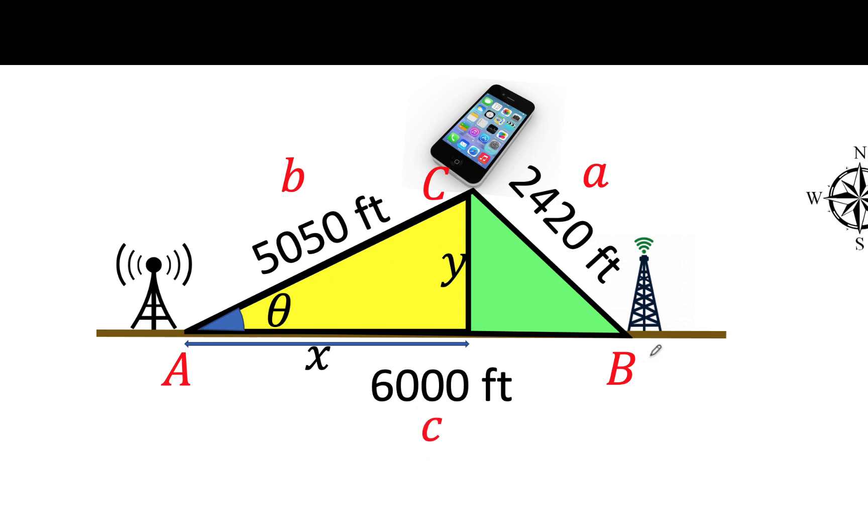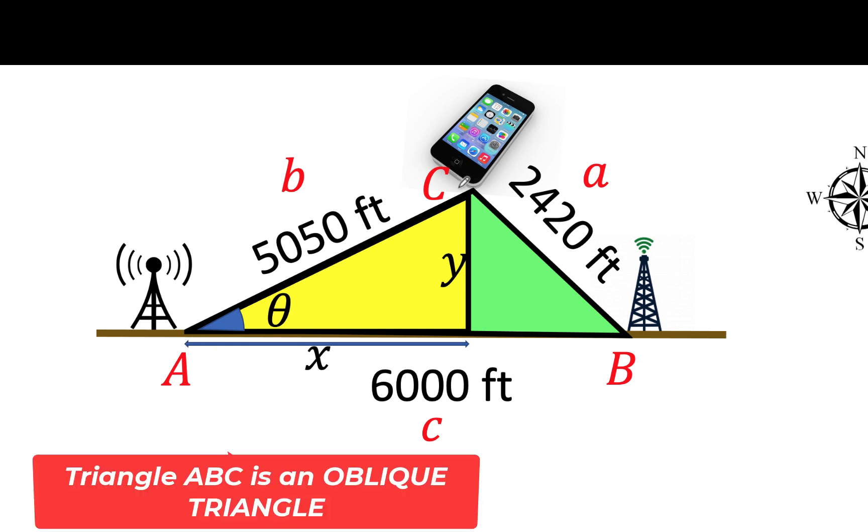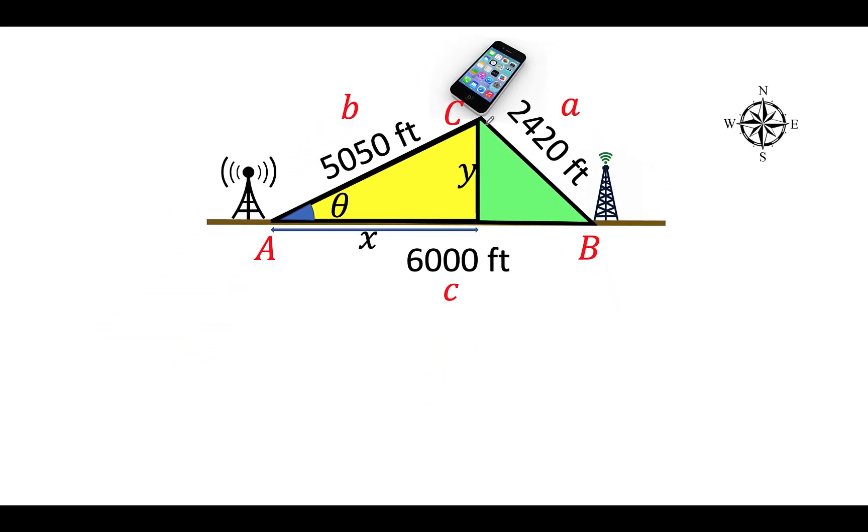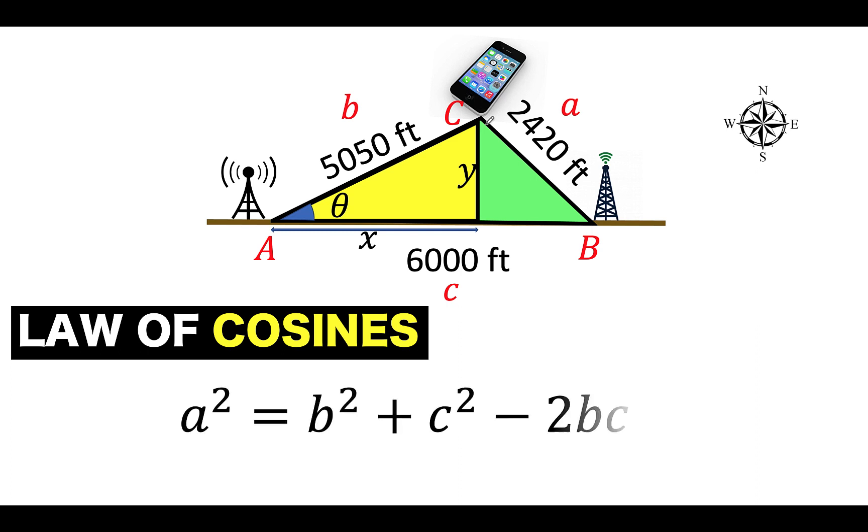Now what we are given here is triangle ABC, which is an oblique triangle. This is not a right triangle. And when we are dealing with oblique triangles, we can either use the law of sines or the law of cosines. When the given are the length of the three sides of the triangle, then that is the signal that we are going to use the law of cosines, which is given by this formula.